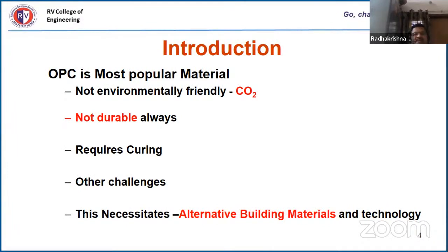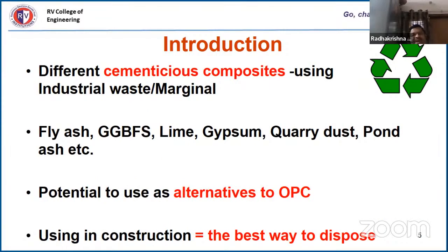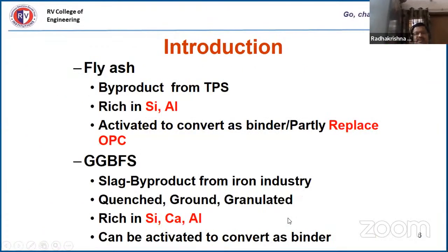Ordinary Portland Cement is the most popular material but is not environmentally friendly — approximately 0.7 tons of CO₂ is released per ton of OPC produced. It is not always durable and has other challenges. This necessitates thinking about alternative materials. Different cementitious composites can be made using industrial waste and marginal materials like fly ash, GGBS, lime, gypsum, and others — some very potential as alternatives to OPC.